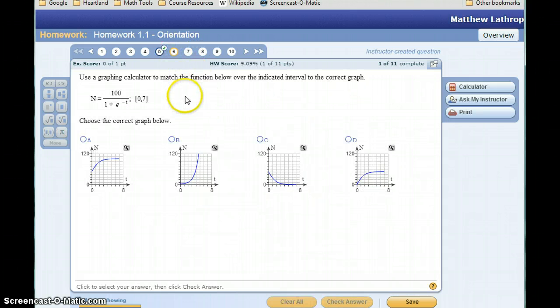We're going to take a look at using that exact same feature, setting the window and then adjusting it to look at a couple more graphs. In this case, we've got a slightly more complicated function, 100 divided by 1 plus e to the negative t, and we're given a domain here from 0 to 7.